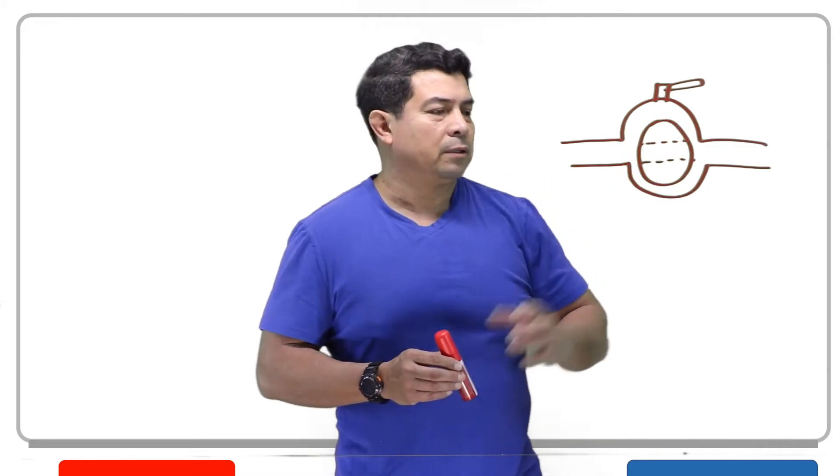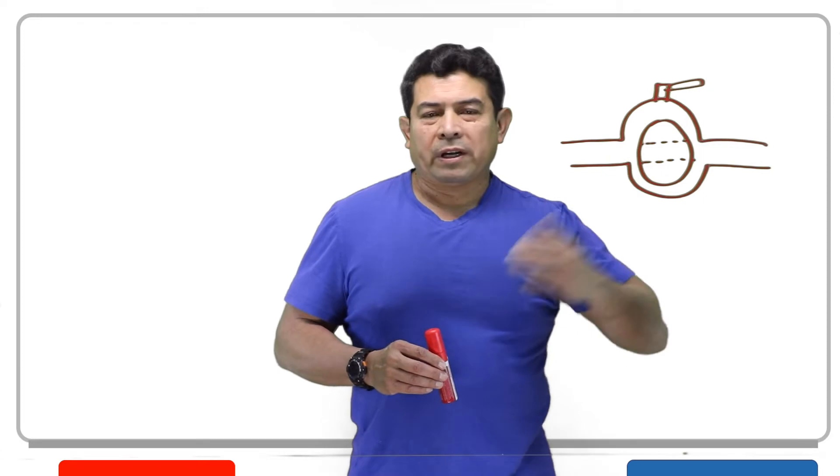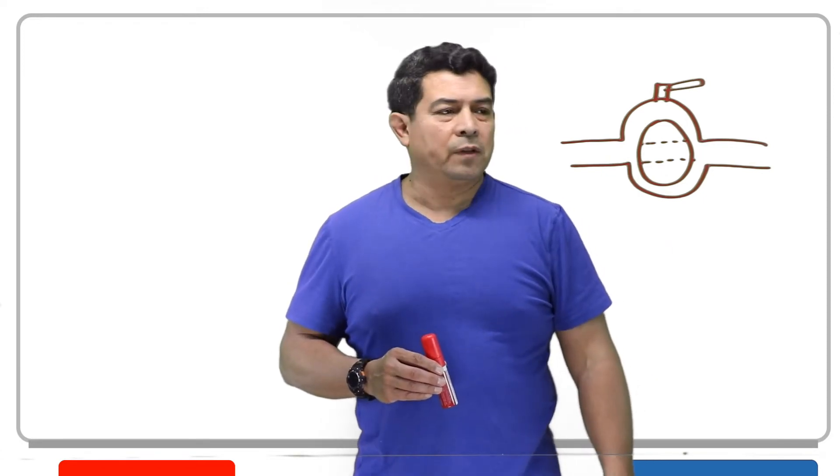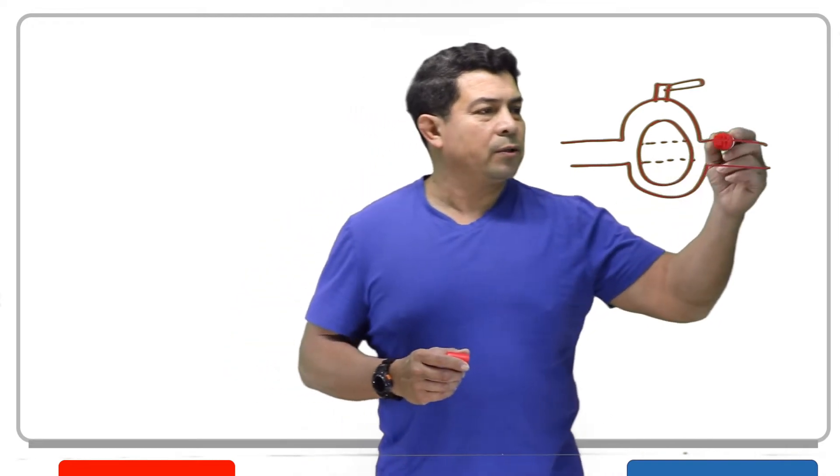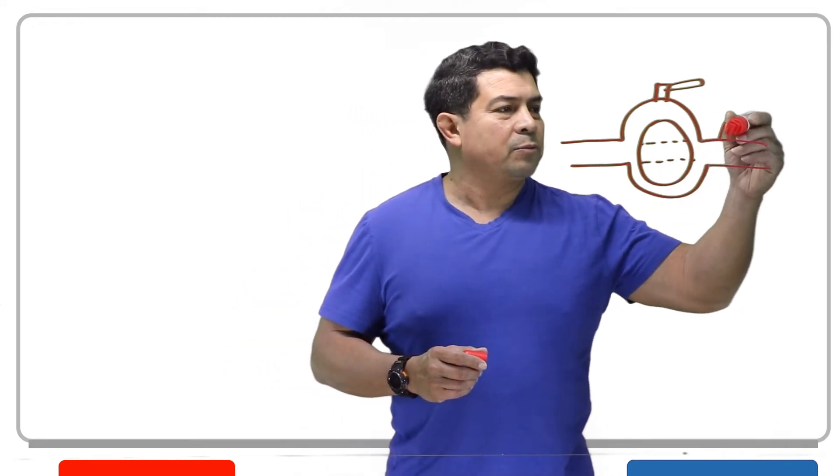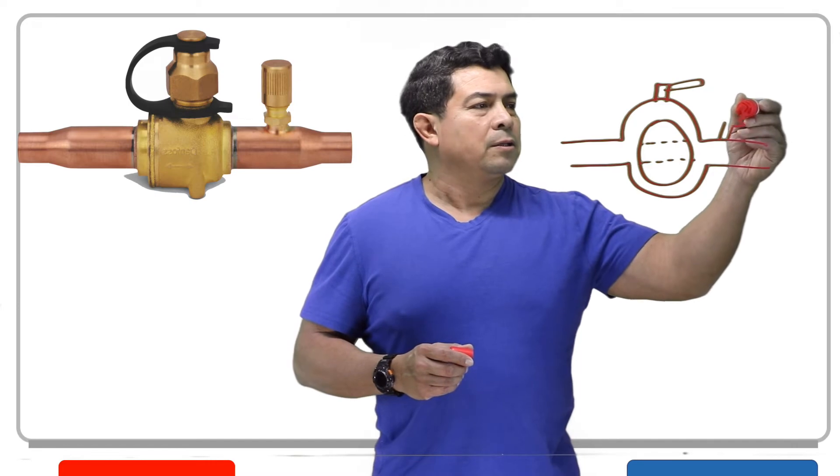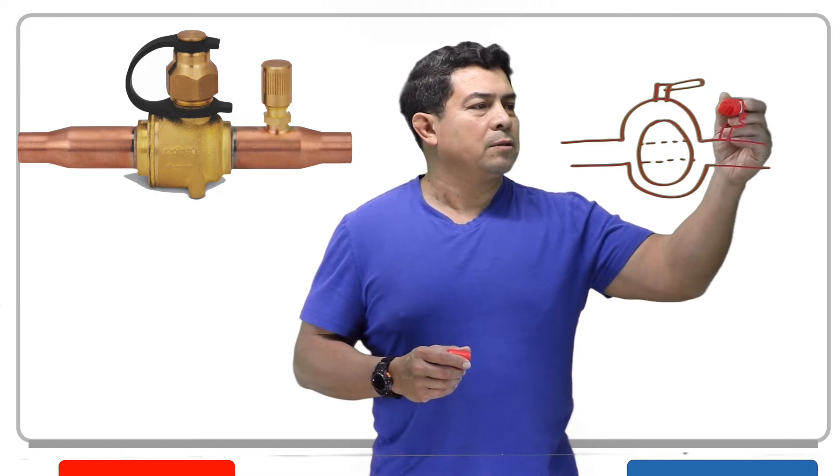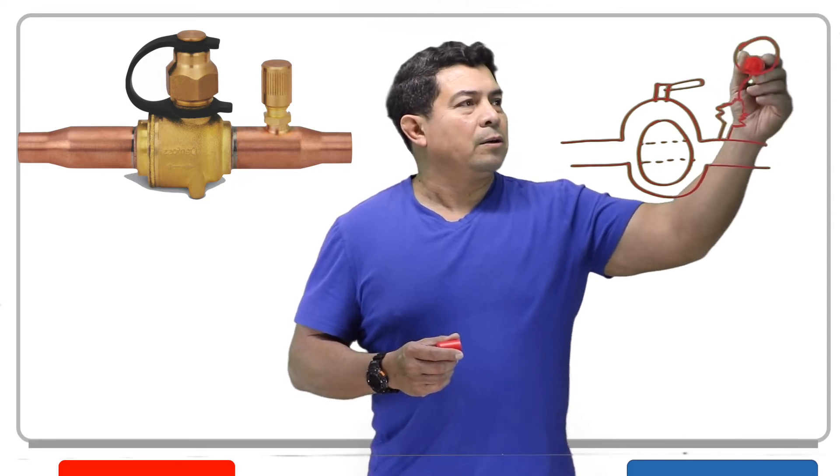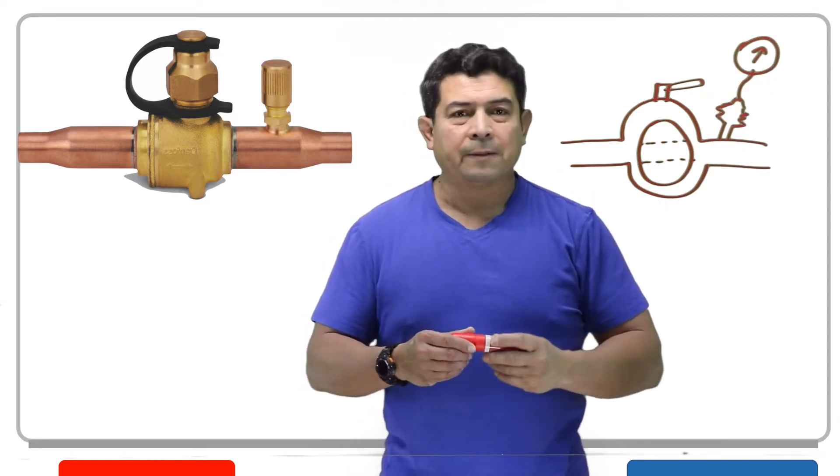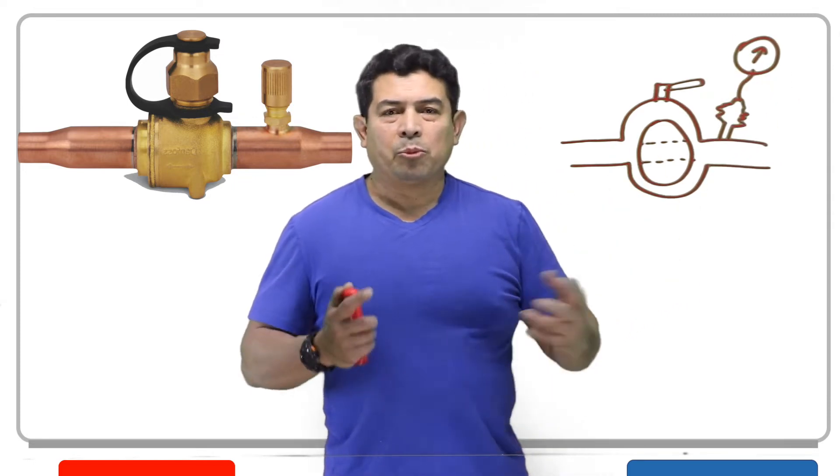These can be installed, for example, right after the receiver so that you can use this as a king valve. On some of these, you're going to have an access port right here. Some people call these Schraders, so that now you can hook up your pressure gauge to that. With this, we can pump the system down.